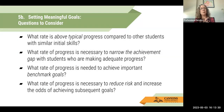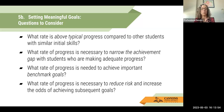Some questions to consider when setting goals for students: What rate is above typical progress compared to other students with similar initial skills? What rate of progress would be necessary to narrow the gap with students who are making adequate progress? What rate of progress is needed to achieve important benchmark goals? And what rate of progress is necessary to reduce risk — that benchmark prediction — and increase the odds of achieving subsequent goals?